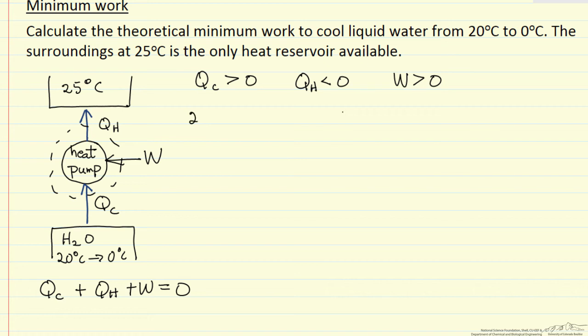So the second law then says that delta S is going to be zero for the pump. This is because we are assuming we can carry this out reversibly, and having a temperature of Tc change.